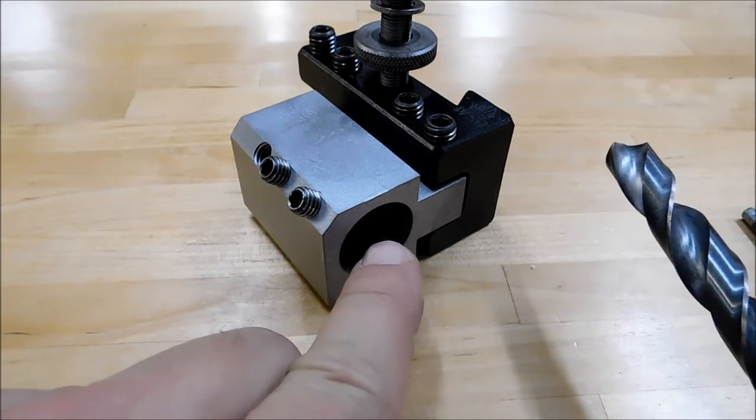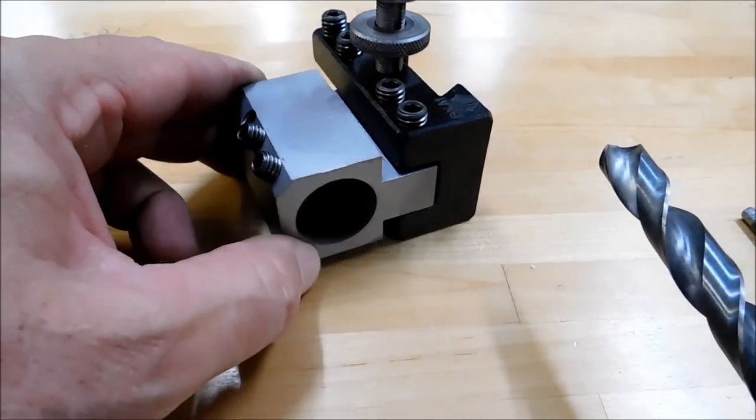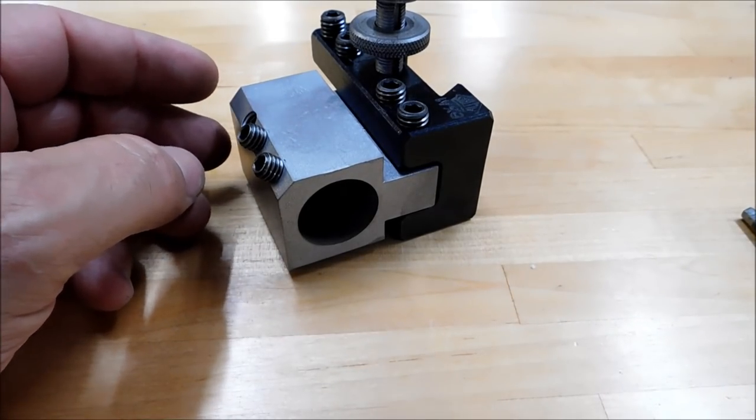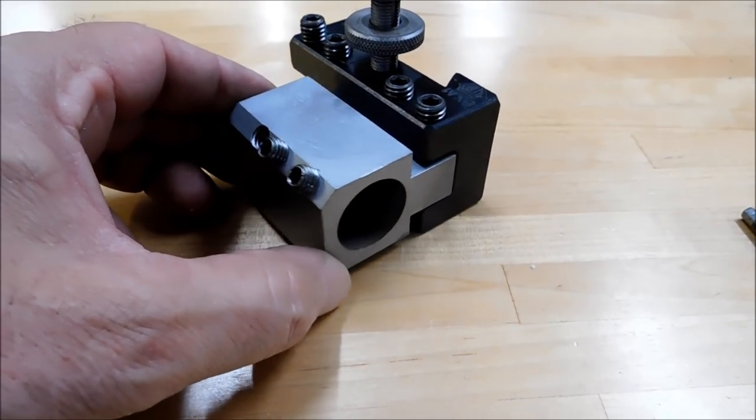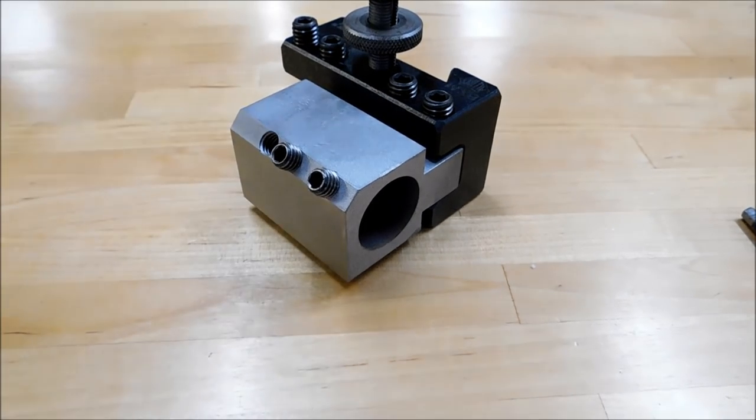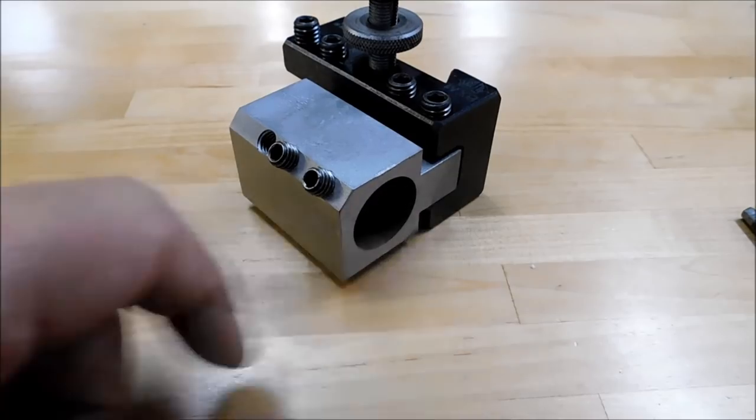If you do have a tailstock chuck with a taper shank on it and you're not using your tailstock because it's a piece of garbage, well, then knock that shank off that drill chuck and get a straight shank and machine your block to accept that.